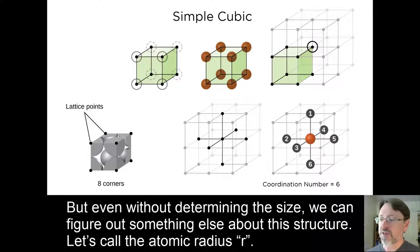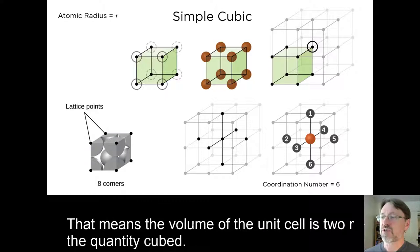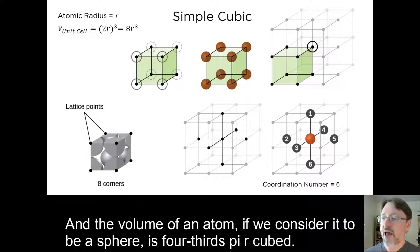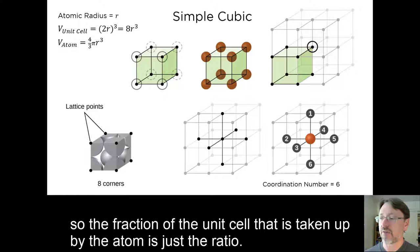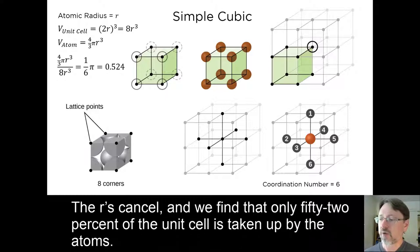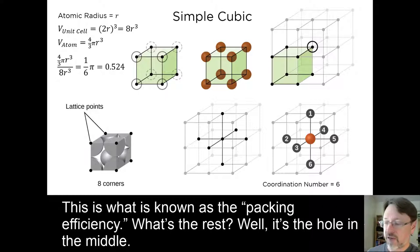But even without determining the size, we can figure out something else about this structure. Let's call the atomic radius r. That means the volume of the unit cell is 2r, the quantity cubed. And the volume of an atom, if we consider it to be a sphere, is four-thirds pi r cubed. And we already determined that each unit cell contains one atom. So the fraction of the unit cell that is taken up by the atom is just this ratio. The r's cancel, and we find that only 52% of the unit cell is taken up by atoms. This is what is known as the packing efficiency.